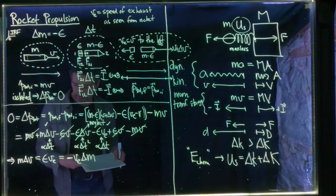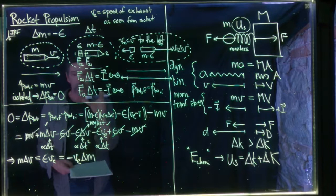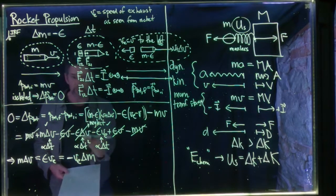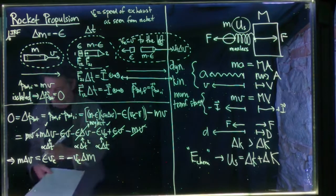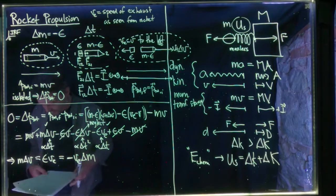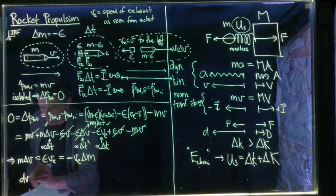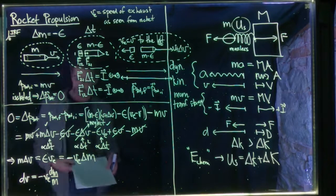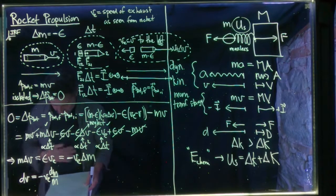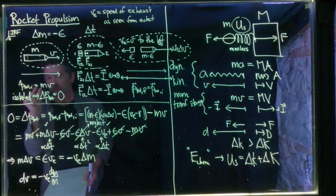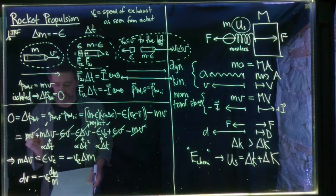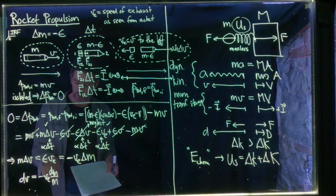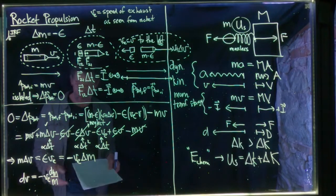Taking the calculus limit (delta T → dT, delta V → dV, delta M → dM) and dividing both sides by M, we get: dV = negative V_E · (dM/M). This says the change in velocity equals negative the exhaust speed times the fractional change in rocket mass. Dividing by dT, the acceleration of the rocket is: dV/dT = negative (V_E / M) · (dM/dT). The acceleration is proportional to dM/dT — the rate at which you're throwing mass out — times V_E, how fast you can throw those particles.